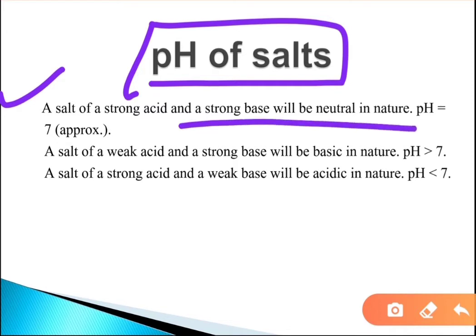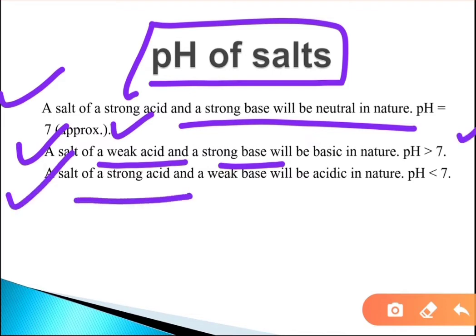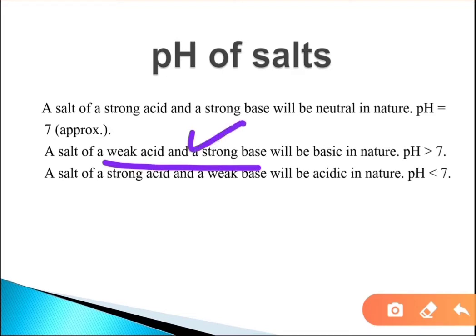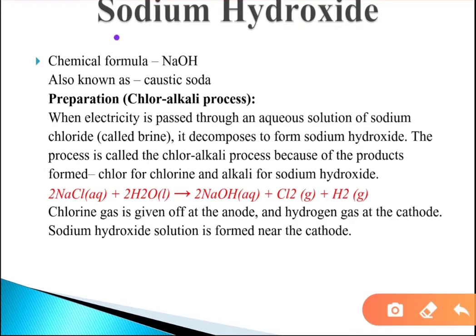The salt of a weak acid and a strong base will be basic in nature, while the salt of a strong acid and a weak base will be acidic in nature with a pH less than 7. The pH is governed according to which component — acid or base — is stronger.